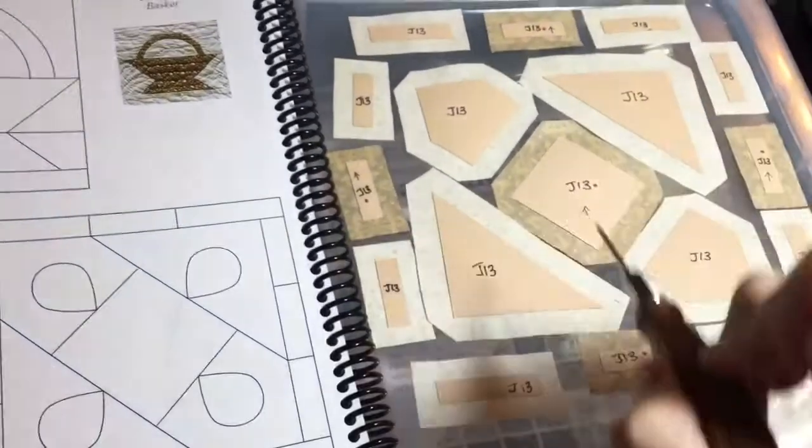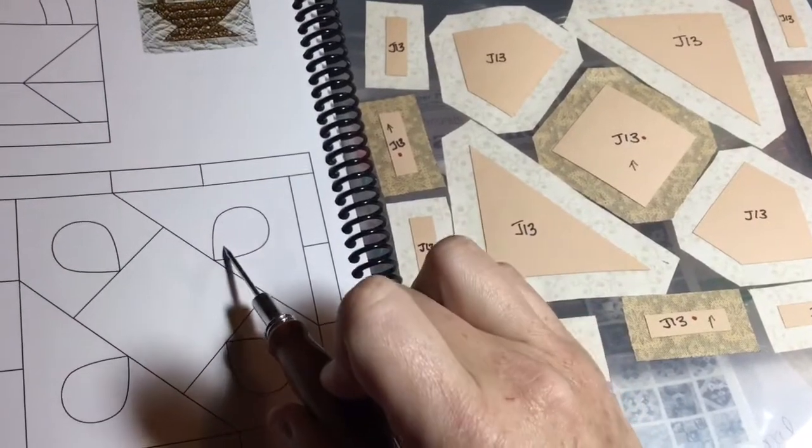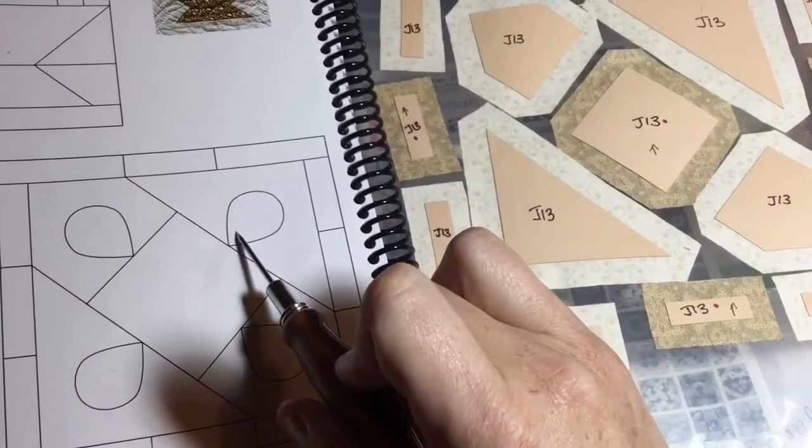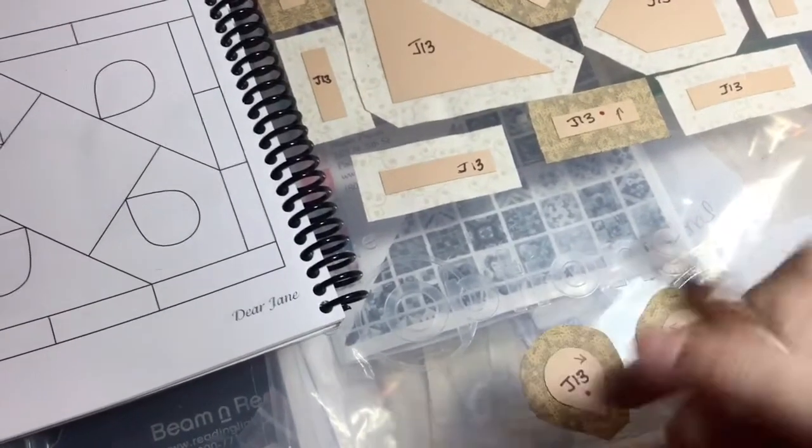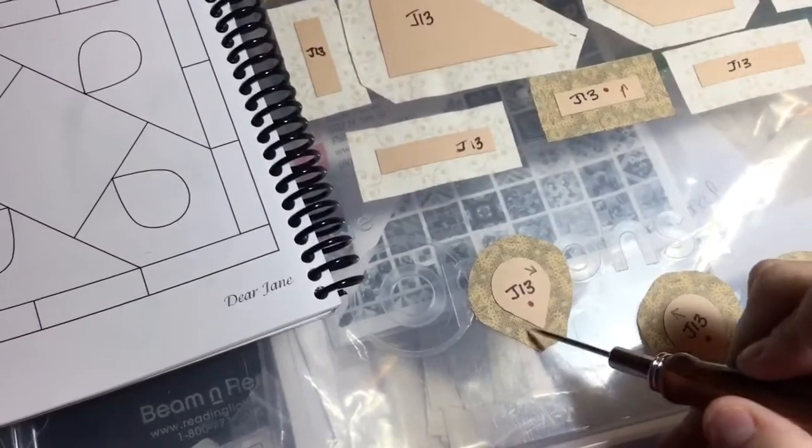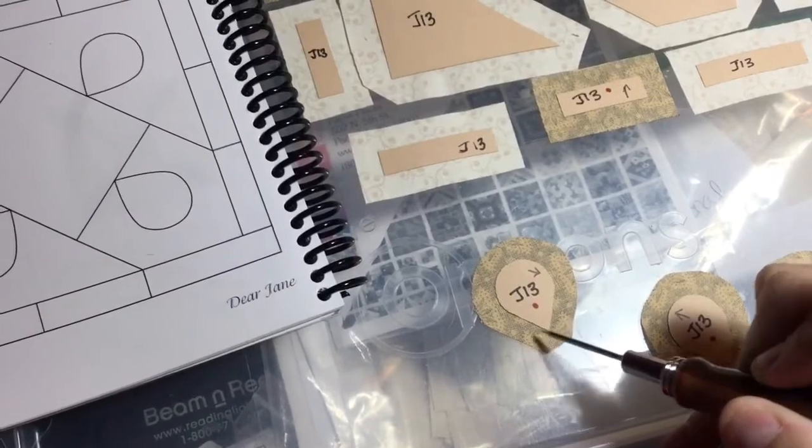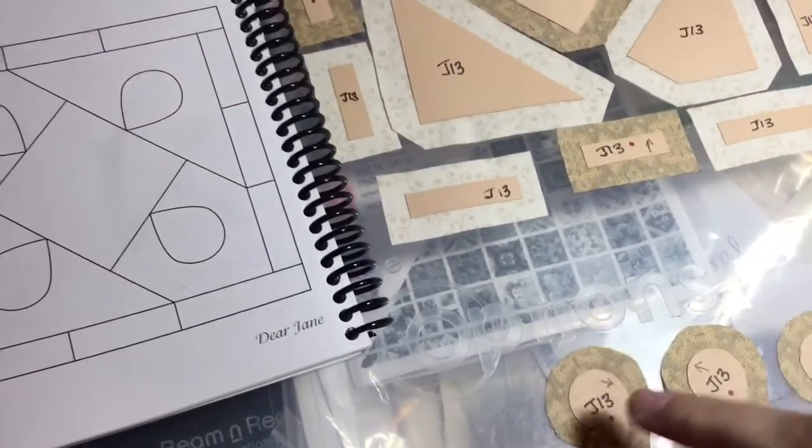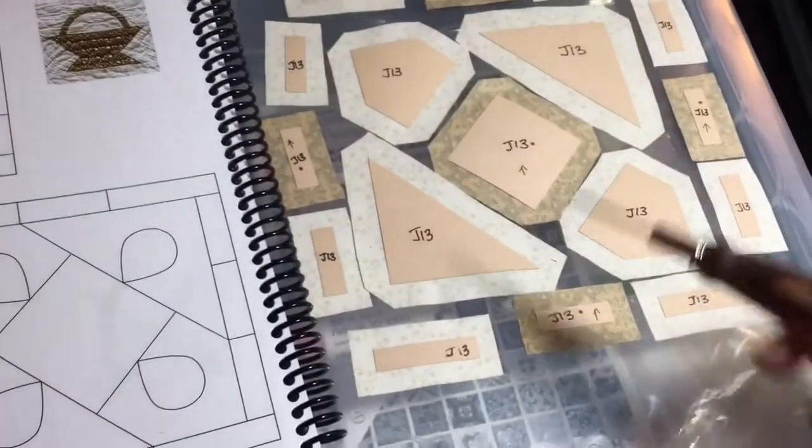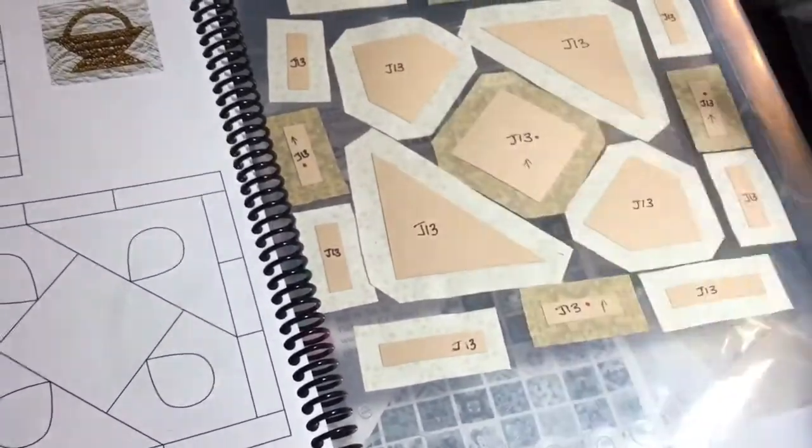Once I get the whole block assembled, then I will be able to applique and place these into place. I will be basting these with a gathering stitch and I'll have to look at this point to see if I'm going to actually glue this down and then gathering stitch it. Right now, I'm going to baste my center section and assemble it.